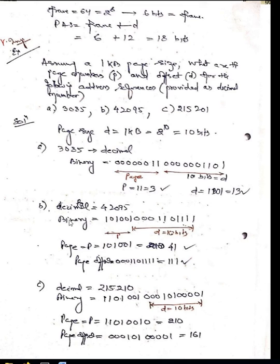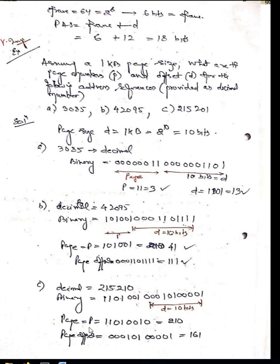For 42095, convert to binary, remove 10 offset bits, leaving 6 bits for the page number. So 6 + 10 = 16 bits total. For 21205, convert to binary and take 10 bits for the offset, leaving 7 bits for the page number. So 7 + 10 = 17 bits. The offset is D and the page number is P. These are the decimal conversions. Thank you.